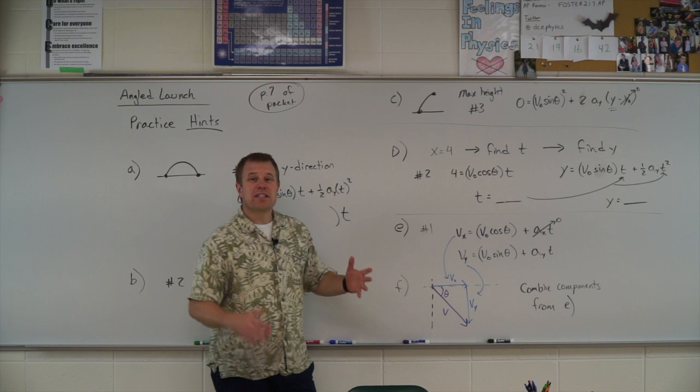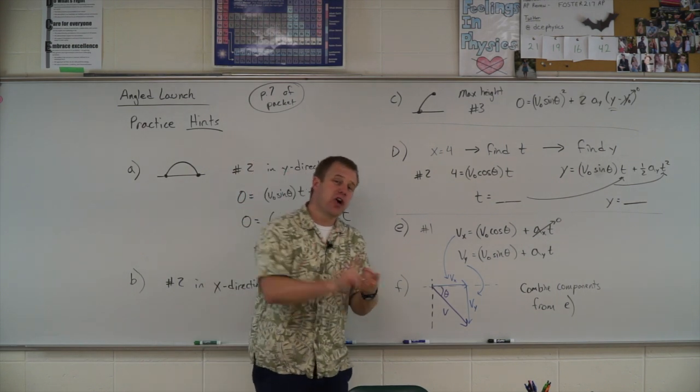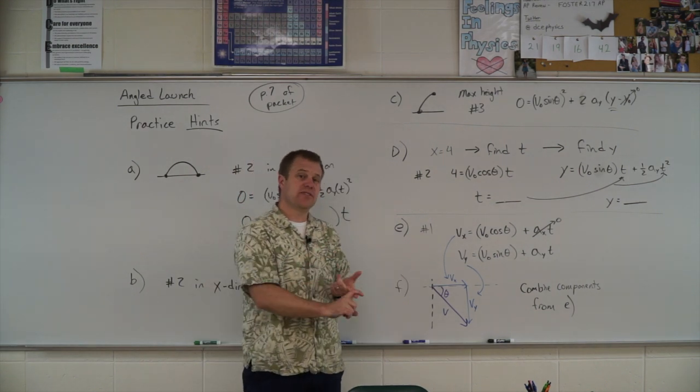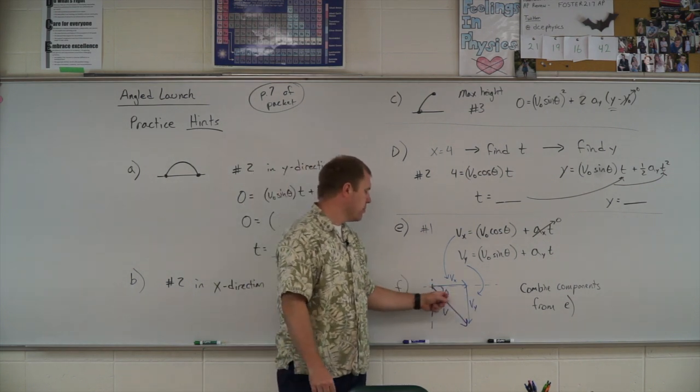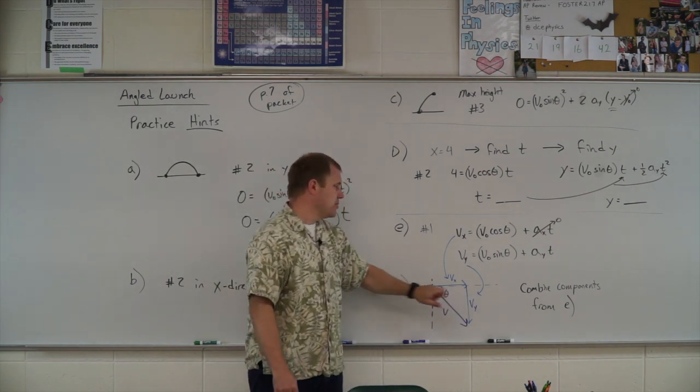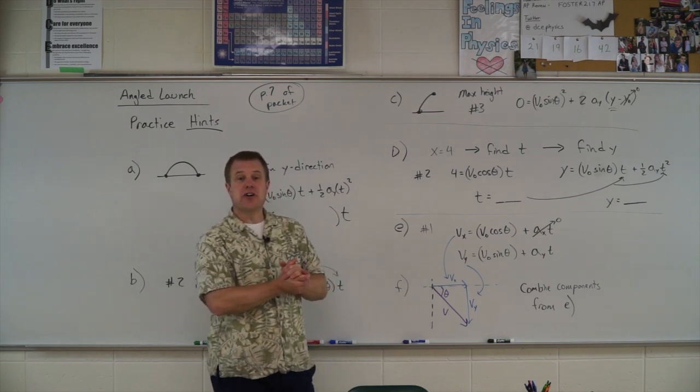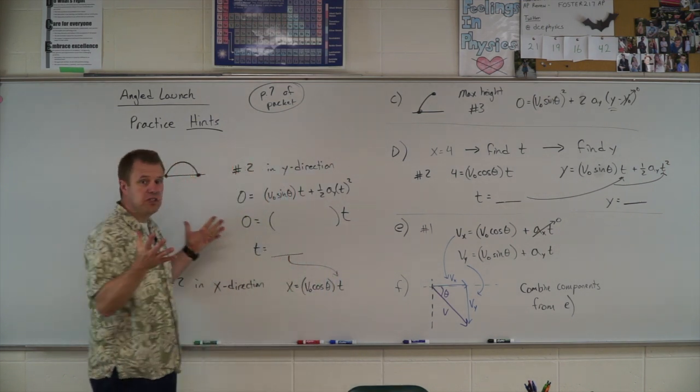Then F wants me to combine those together to find the total or the resultant velocity and the angle. So I will have to combine those two components together to find the magnitude and direction. So there's your hints for this big practice problem.